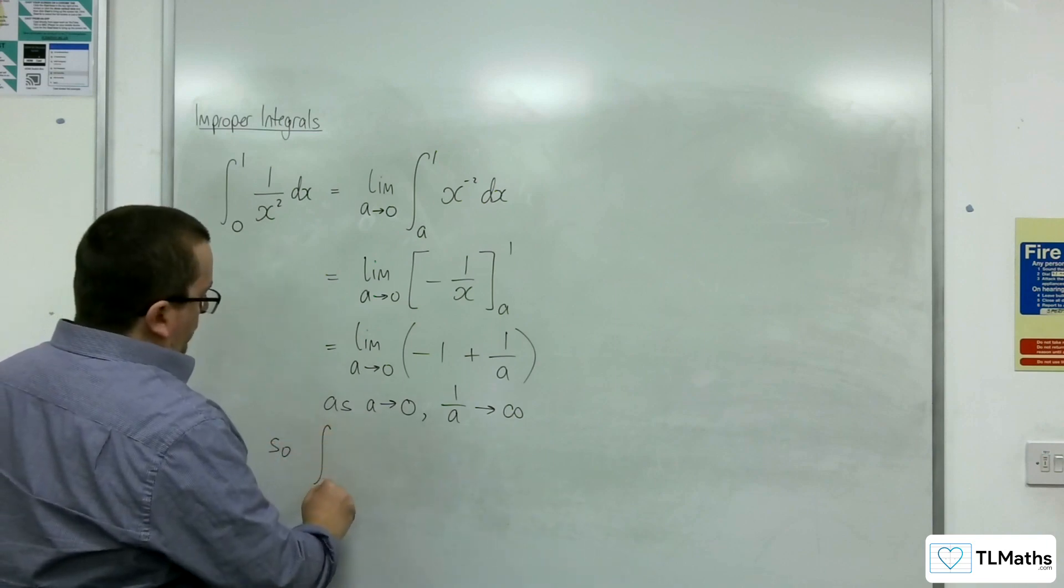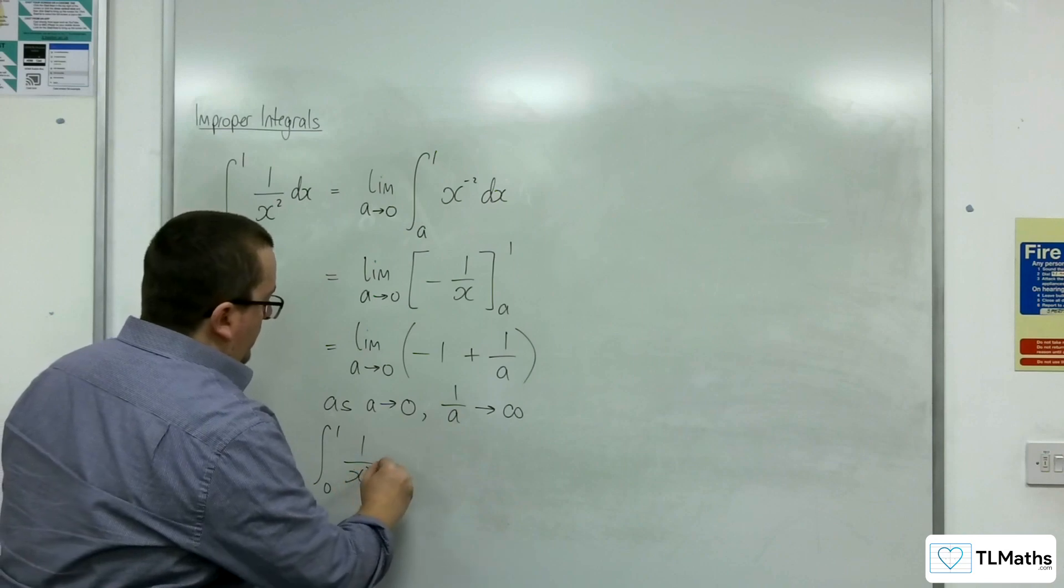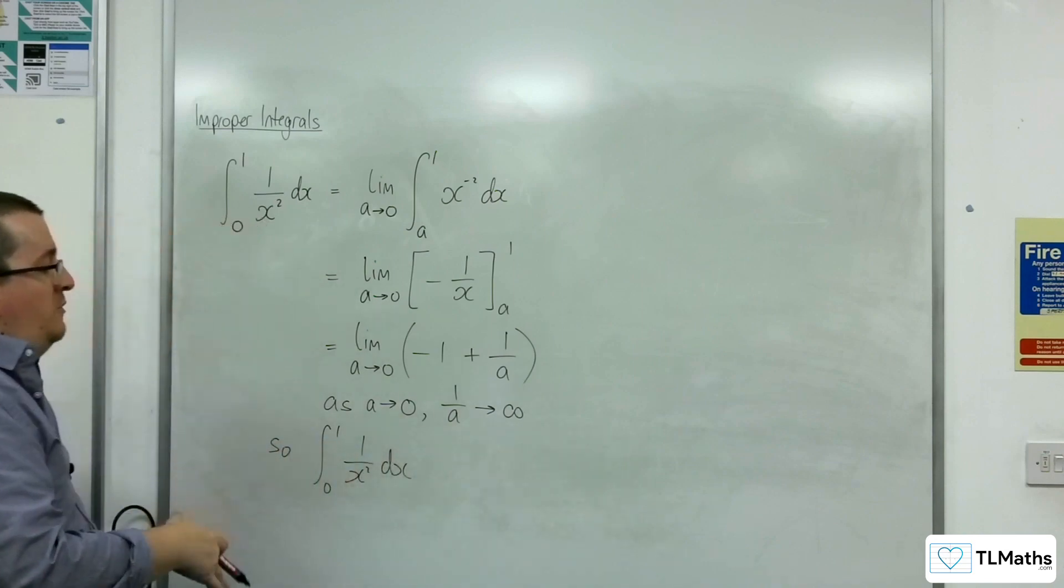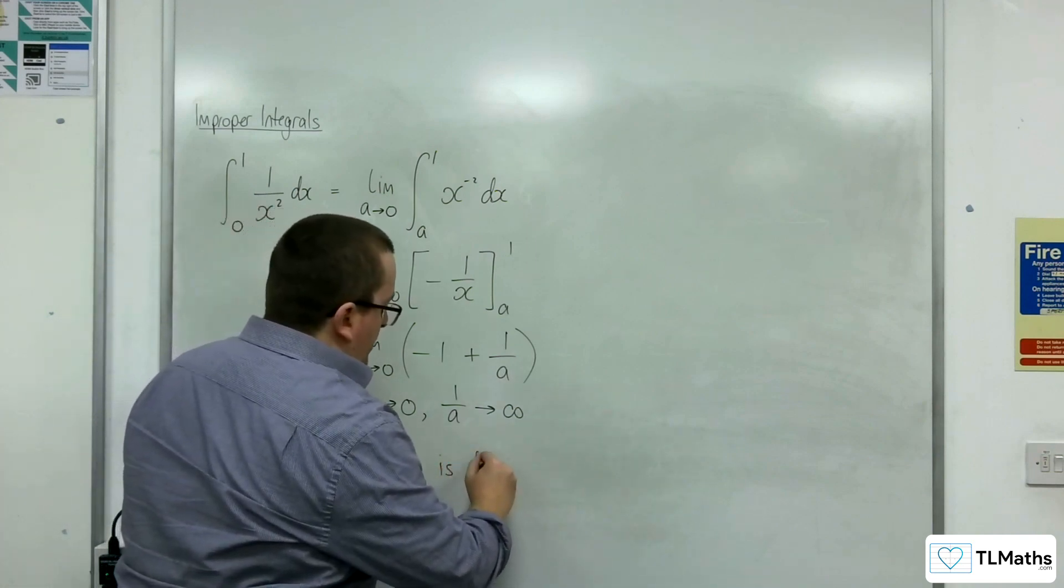So the integral between 0 and 1 of 1 over x squared dx is divergent, it is undefined.